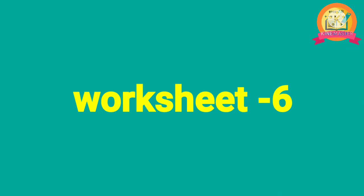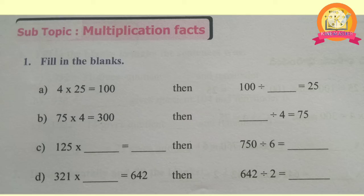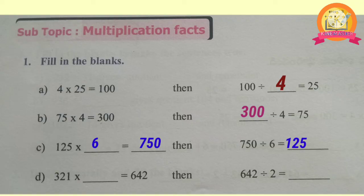Worksheet 6: In a multiplication, multiplier multiplied with multiplicand gives the product. Therefore, multiplier equals product divided by multiplicand, and multiplicand equals product divided by multiplier. First, fill in the blanks: 4 × 25 = 100, so 100 ÷ 4 = 25. 75 × 4 = 300, so 300 ÷ 4 = 75. 125 × 6 = 750, so 750 ÷ 6 = 125. 321 × 2 = 642, so 642 ÷ 2 = 321.